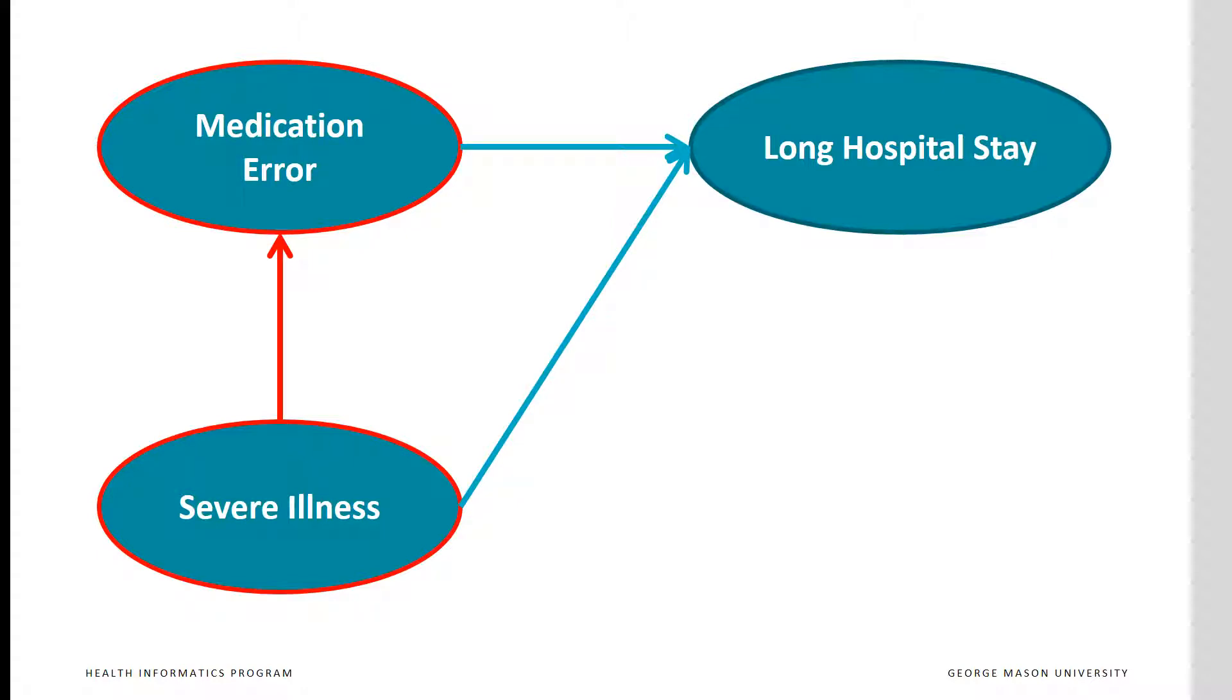If we think that this is not correct, we can insert a causal link between severity of the patient's illness and the frequency of medication error. Now the graph shows not only an association between severity of the patient's illness and medication error, but a causal relationship.